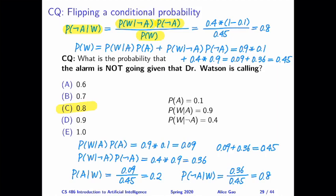But in order to calculate this, we need these three quantities. And we have one of them directly. So we have the probability of W given not A directly. That's right there. We have the probability of not A indirectly. We have probability of A. So not A is just 1 minus 0.1.